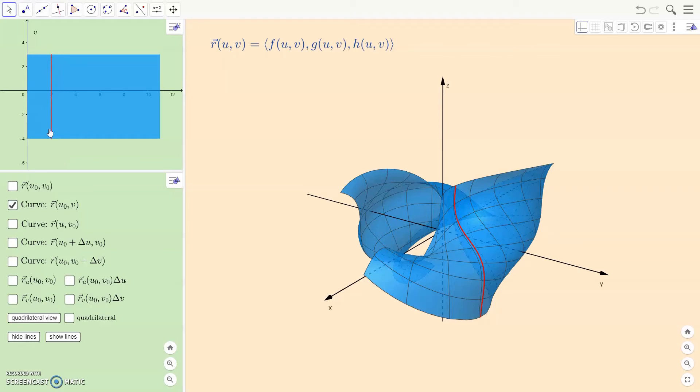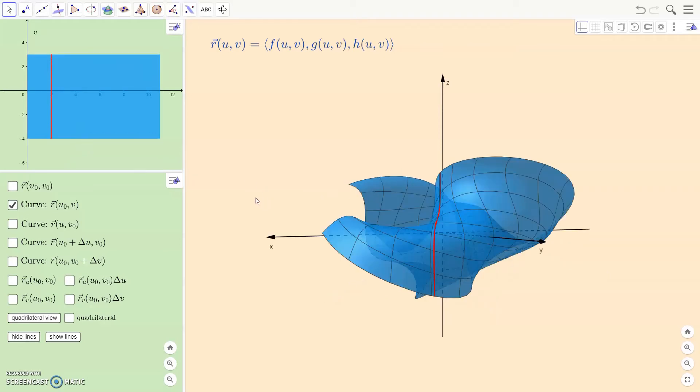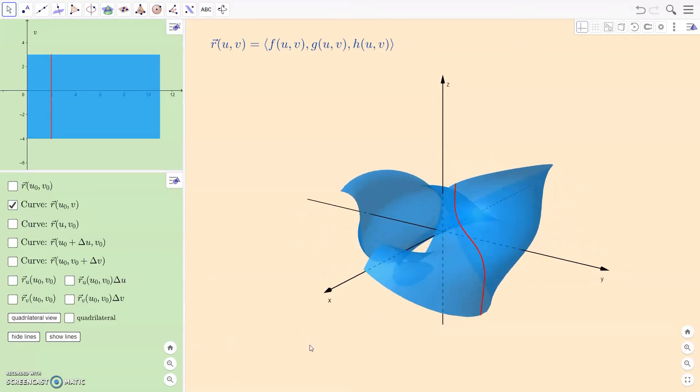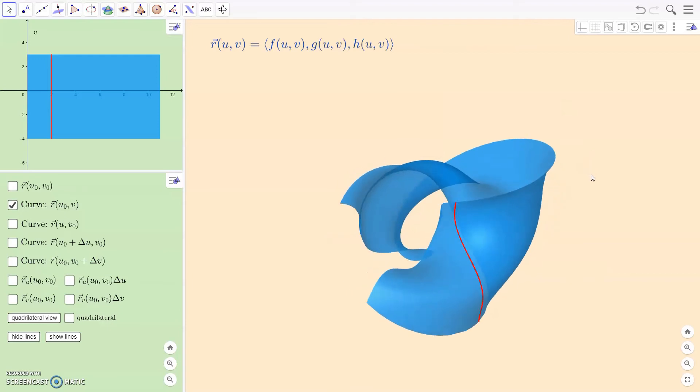So fixing a U but letting the V change turns into a curve on my surface. So that is specifically drawn with U being the number 2. Let me hide the black lines that GeoGebra puts in there. We'll just focus on our own lines here. As a matter of fact, let me hide the axes just to focus really on what I want to see here.